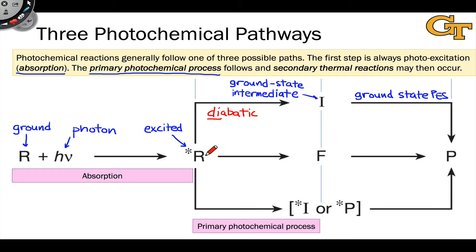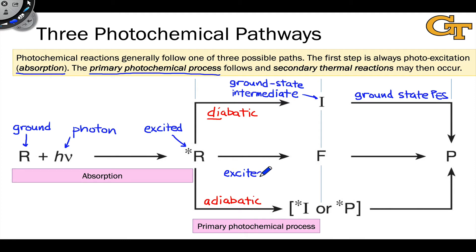In other cases, the excited state can stay on the excited state potential energy surface and generate an excited state intermediate, or in fact, the product in an excited state. Here we retain the asterisk, and now we're dealing with only a single potential energy surface — this is called adiabatic, going from excited R to excited I or P. The key difference from the diabatic process is that now we're dealing with an excited state intermediate or product, not a ground state one. These are generally less common than diabatic reactions, although for triplet states they are somewhat more frequent than for singlet states, because the triplet state has a more difficult time converting to a ground singlet state than an excited singlet state has converting to a ground singlet state.